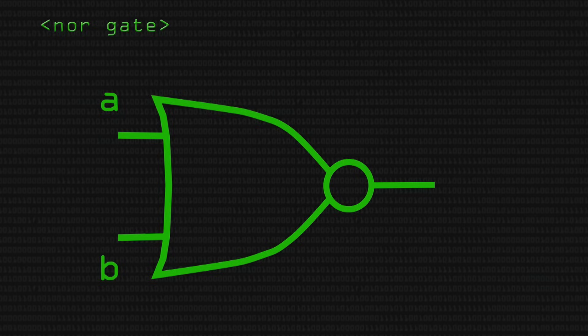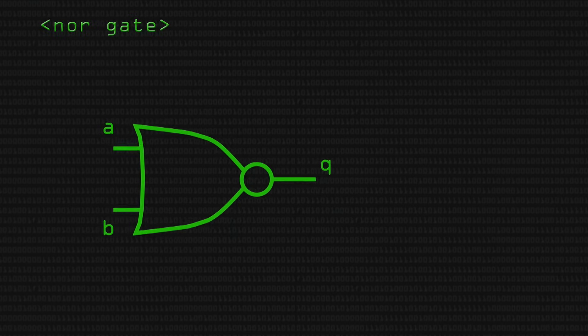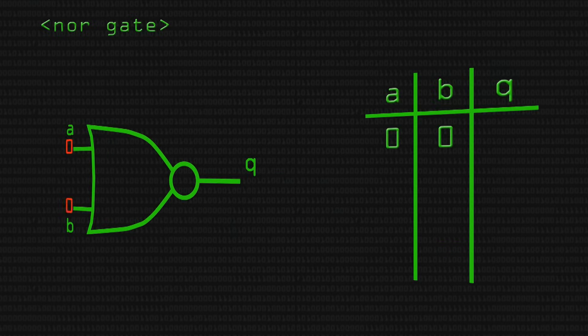So that's our NOR gate and it has two inputs which we'll label as A and B. And it has an output which we'll label as Q. So we can build up a truth table for this. Normally with a NOR gate, zero or zero would be zero. But we're inverting it because it's a NOR gate, so the output is one. Zero or one is one, but it's inverted, so the output is zero. One or zero is one, but it's inverted, so the output is zero. One or one is one, inverted, so the output is zero. So that's the truth table for our NOR gate.